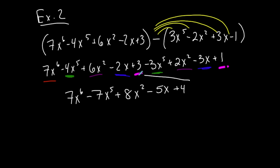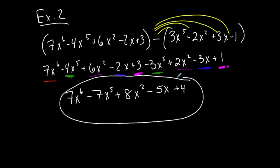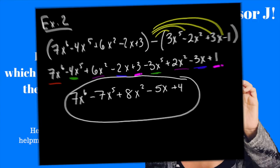Now I have my final difference of these two polynomials. It is a 5-term polynomial. It is a 6th degree polynomial expression. It has 4 variable terms and 1 constant term. And that's it for addition and subtraction — not bad.